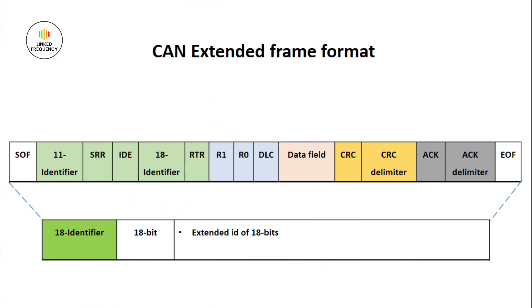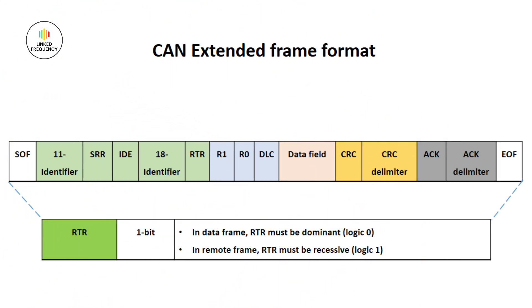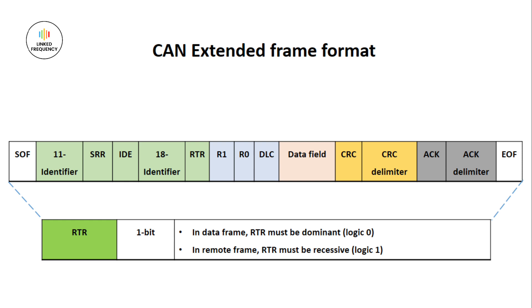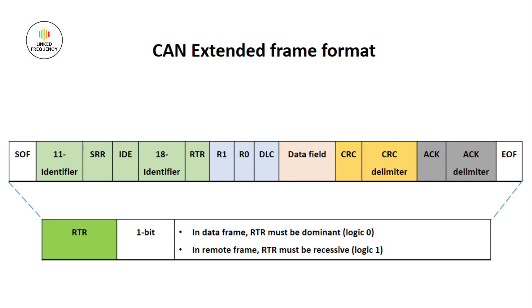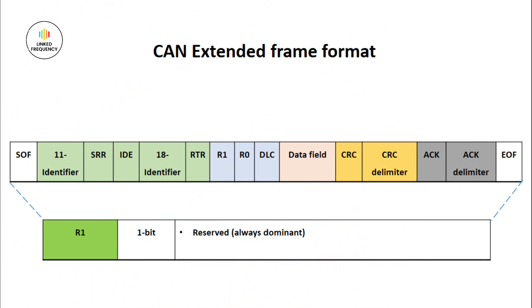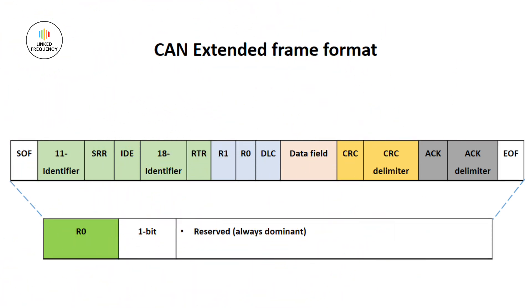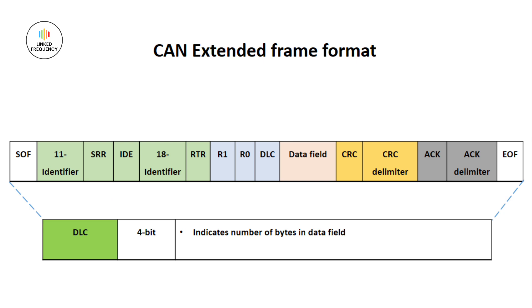The 18-bit identifier is an extended identifier field of 18 bits provided in the extended frame format. Moving on to RTR — 1 bit — where in a data frame the RTR value is dominant, and in a remote frame it is recessive. R1 is a reserved bit for future use, always dominant. R0 is also a reserved bit for future use, always dominant. DLC is a 4-bit value indicating the total number of bytes in the data field.